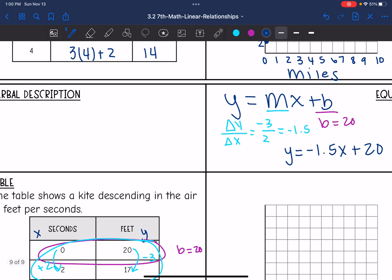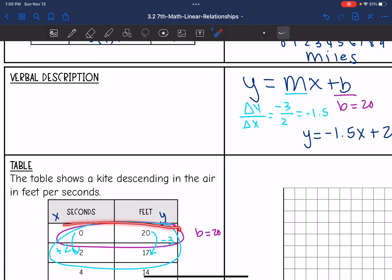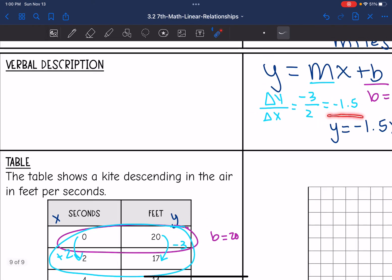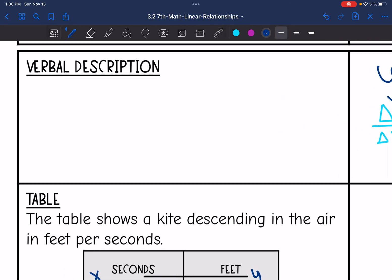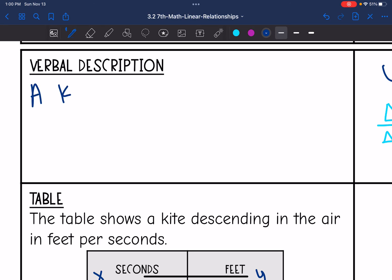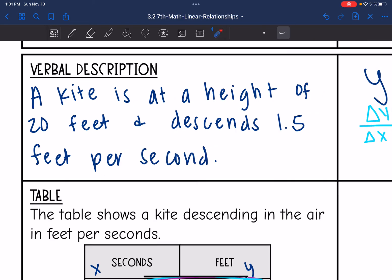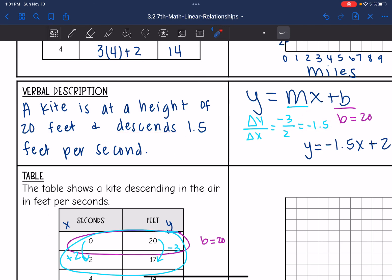And let's go ahead and write this verbal description. So at 0 seconds, my kite is at 20 feet, and then it keeps decreasing. And now that we have found the rate of change, we know it's decreasing by 1.5 feet per second. So the verbal description would be a kite is at a height of 20 feet and descends 1.5 feet per second. So I needed to make sure I put that word descends in there, since the rate of change was negative and our table was going down.